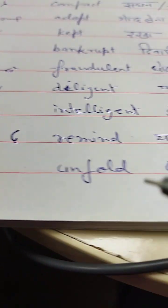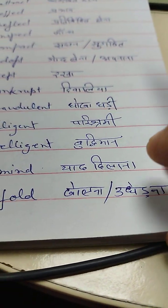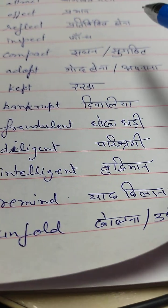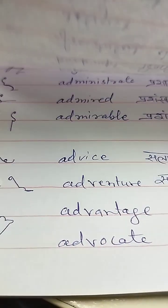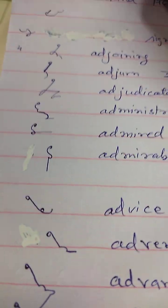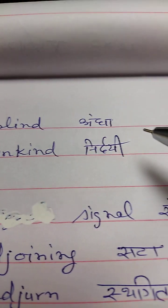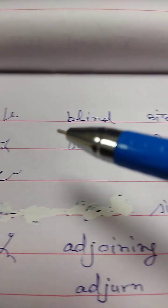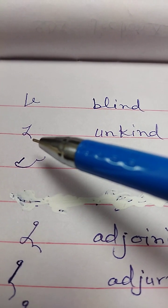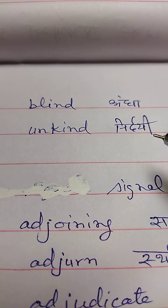Unfold — kholna ya udherna. Next page. Blind — andha. Unkind — nirnai.